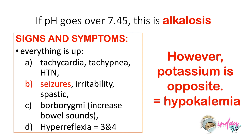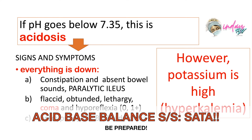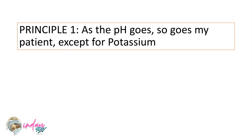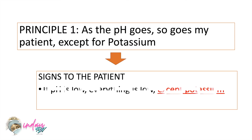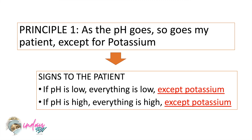Take note that the signs and symptoms of alkalosis and acidosis will play in the select-all-that-apply questions. So you should know your first principle: as the pH goes, so goes my patient, except for potassium. If the pH is low, every system in the body is shutting down. Meanwhile, if the pH is high, every system in the body is irritable, so the patient can suffer hyperexcitability.